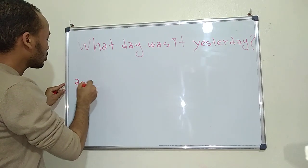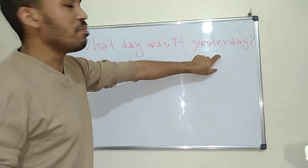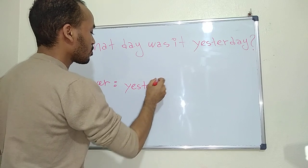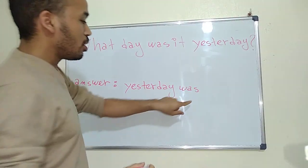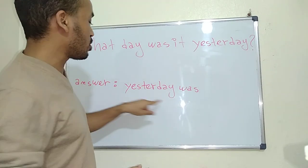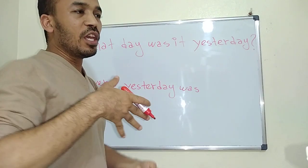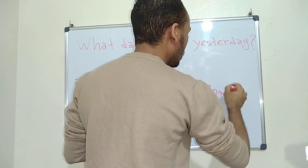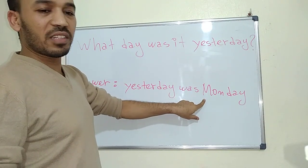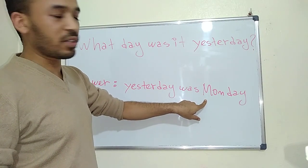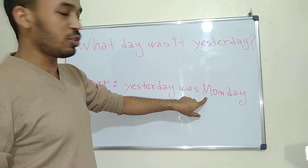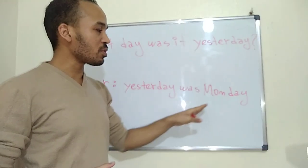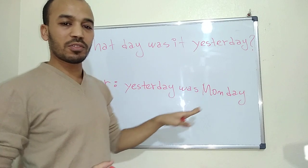The answer will be: we put 'yesterday' at the beginning as the subject. 'Yesterday was...' — the verb 'to be' conjugated in the simple past. If today is Tuesday, then yesterday was Monday. Pay attention — the first letter of the day name should be capitalized. So: 'What day was it yesterday?' — 'Yesterday was Monday.' And we omit the question mark because this is an answer.